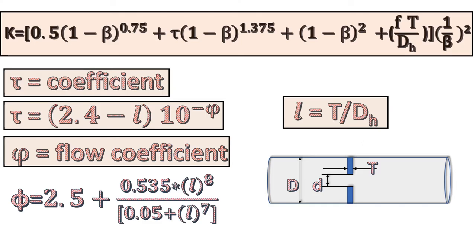Velocity coefficient φ can be calculated using this equation. Here symbol L is the ratio of plate thickness to hydraulic diameter of orifice opening. After putting all the values in this equation, we can calculate coefficient of fluid resistance K.